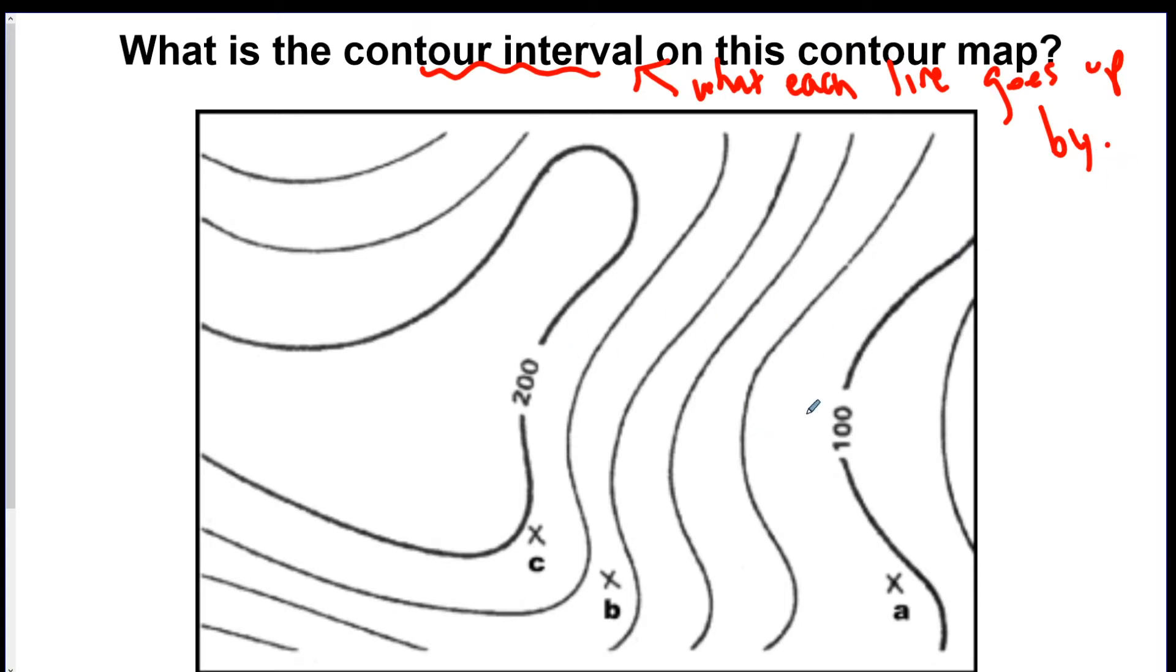So can you figure out what each of these lines go up by? They give you 1 every 5 lines. So here's 100 and here's 200. So what do each of the lines represent? How much? Well, you count. So if there's 100 to 200, it goes up probably by 20s. So this should be 120, 140, 160, 180, and there it is, 200. So the contour interval is 20. Now, they didn't give us a unit for this map, so we don't know if it's 20 feet, 20 miles, 20 meters. We don't know. So we just say 20 for now.